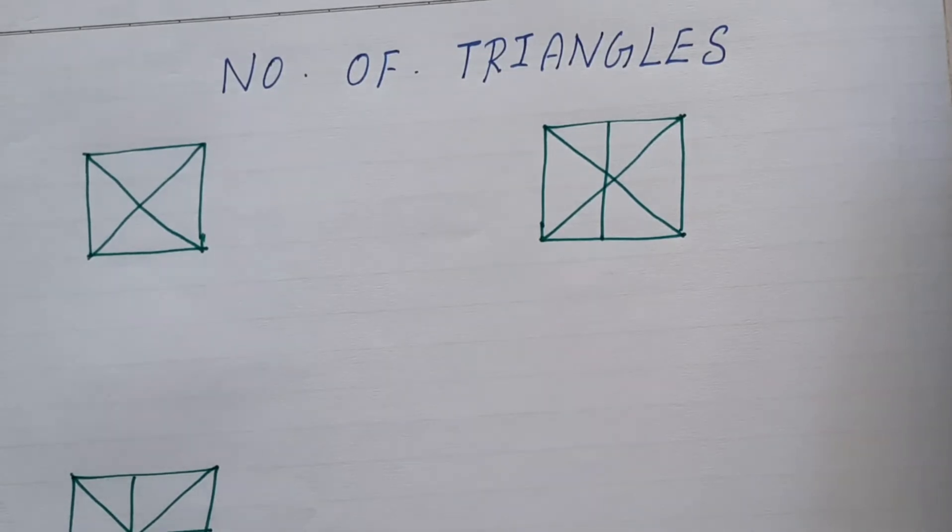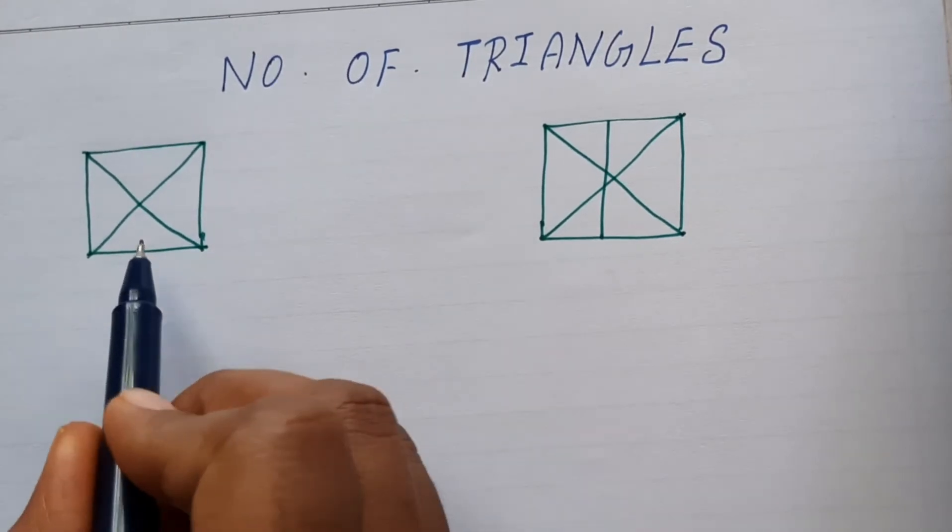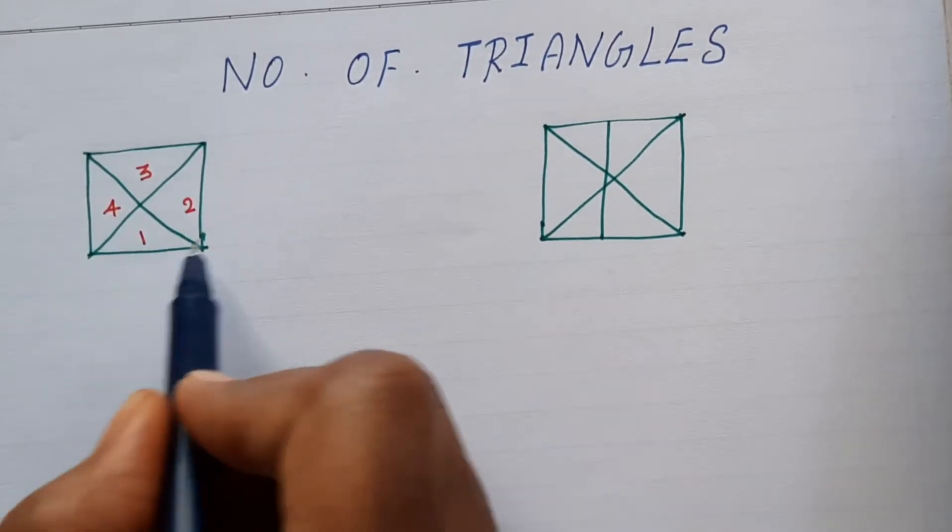What do you see in the first figure? If you cross the square, you will see the number of triangles. Let's do the number.